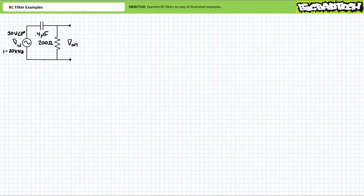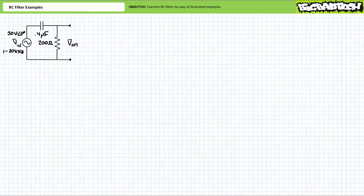Consider the following series circuit consisting of a 200 ohm resistor and a 0.4 microfarad capacitor. The source Vin has an effective value of 30 volts and an excitation frequency that can be varied from 1 to 20 kilohertz. Is this a high pass or a low pass filter? Note Vout, the property of interest, is being read across the resistor. If you're tracking, you should realize that this is a high pass filter.